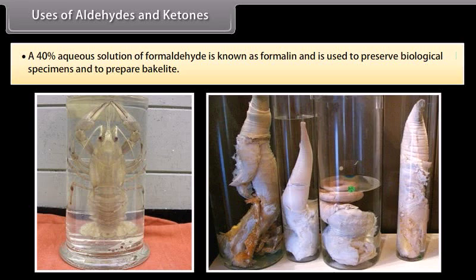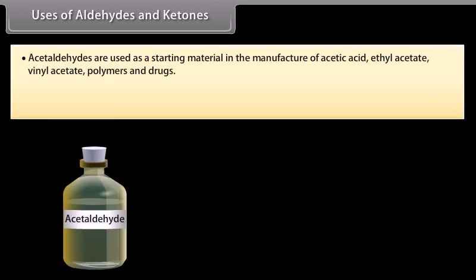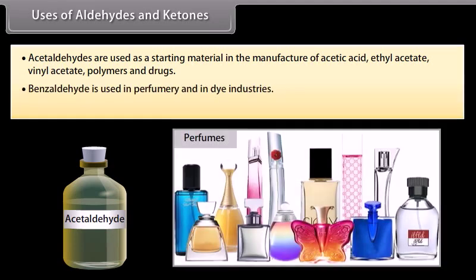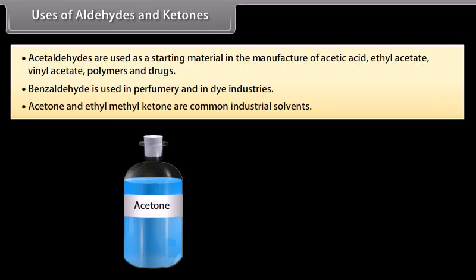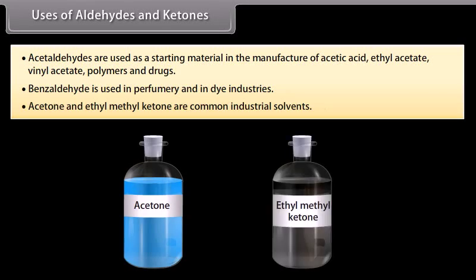Uses of aldehydes and ketones: a 40% aqueous solution of formaldehyde is known as formalin and is used to preserve biological specimens and to prepare bakelite. Acetaldehydes are used as a starting material in the manufacture of acetic acid, ethyl acetate, vinyl acetate, polymers and drugs. Benzaldehyde is used in perfumery and in dye industries. Acetone and ethyl methyl ketone are common industrial solvents.